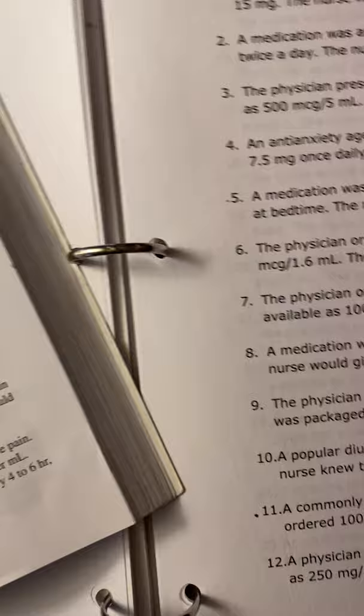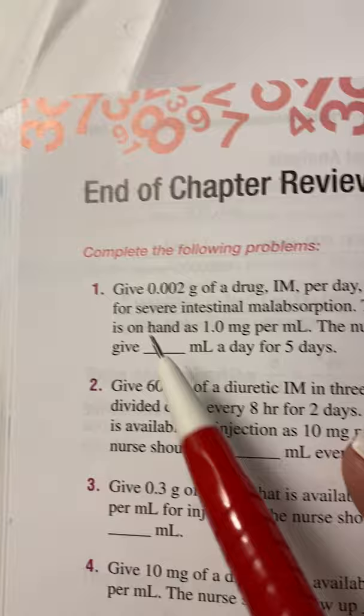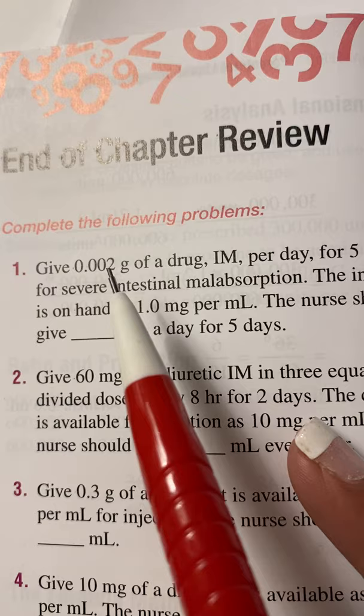For number one on the actual homework assignment, it says give 0.002 — how would you read that? Tenths, hundredths, thousandths — give two thousandths gram of a drug.